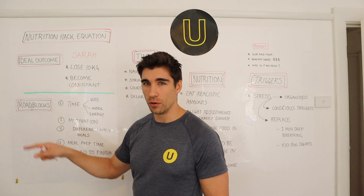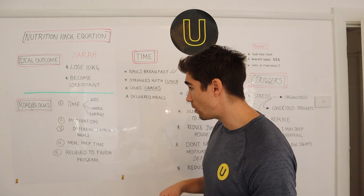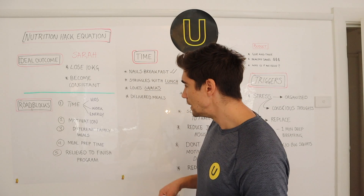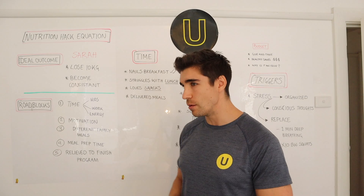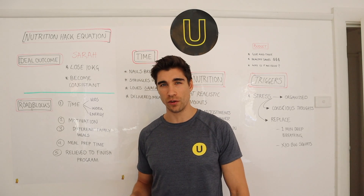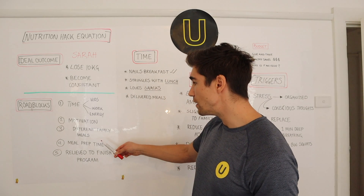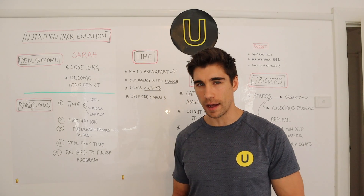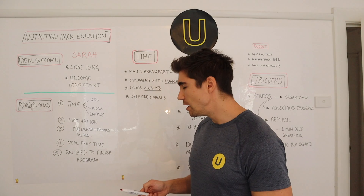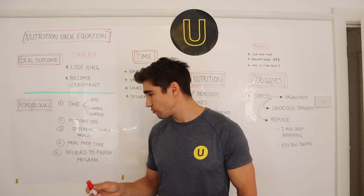So what do we analyze with her roadblocks? Time — she's a mother of three, she's got kids, she works full time, she's really low energy, she's on the go all the time, and quite often mothers put themselves last. Motivation is a big one — she finds her motivation comes in waves, which is correct, motivation does come and go. She also struggled on previous meal plans because her family was eating differently than her meal plan, so she found it tricky to cook separate meals.